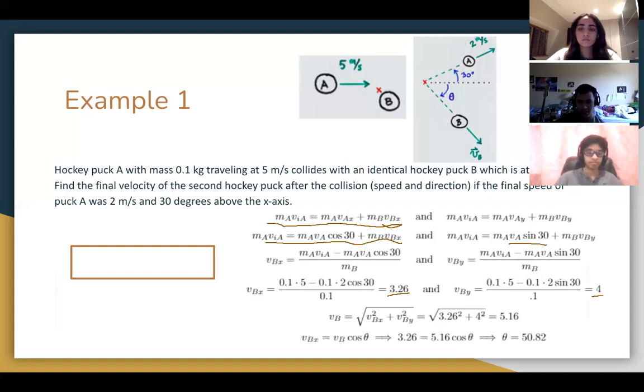To find the magnitude, we just use the Pythagorean theorem to get 5.16 meters per second. And then we do some trig, use the inverse cosine to find that theta is about 50.82 degrees below the x-axis.